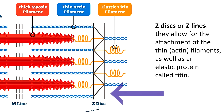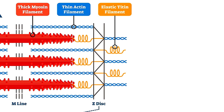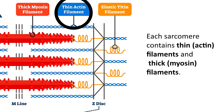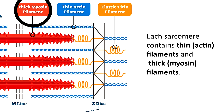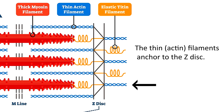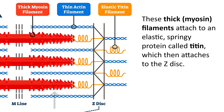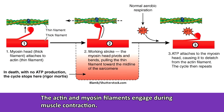As we take a closer look at the structure of a sarcomere, you'll notice these zigzag sections that mark the endpoint of each sarcomere. These are called Z-discs or Z-lines, and they allow for the attachment of the thin actin filaments as well as an elastic protein called titin. Each sarcomere contains thin actin filaments and thick myosin filaments. The thin actin filaments, represented here in blue, anchor to the Z-disc. The thick myosin filaments, represented here in red, attach to an elastic, springy protein called titin, which then attaches to the Z-disc as well. The actin and myosin filaments engage during muscle contraction, which I'll discuss in just a moment.